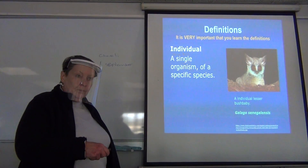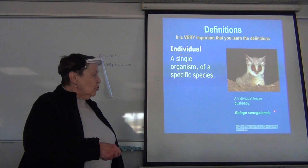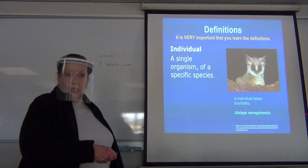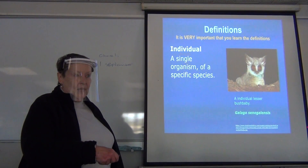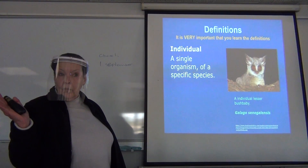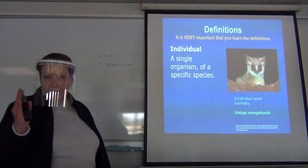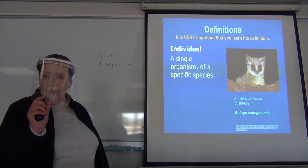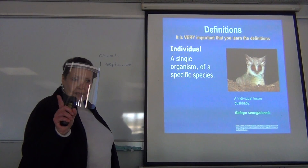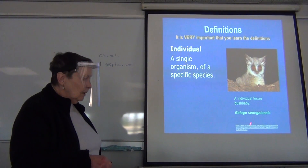Very occasionally you will get a scientific name with three words, and that third word is a subspecies. For example, modern day humans are Homo sapiens sapiens. Archaic humans were Homo sapiens, and we are a subspecies — Homo sapiens sapiens — because we have a third word. For the subspecies, the whole thing is lowercase and underlined. If typed, it is in italics.